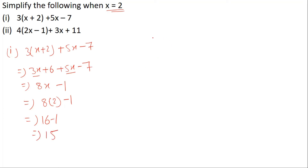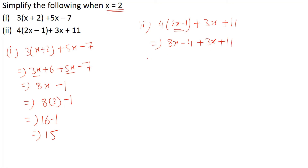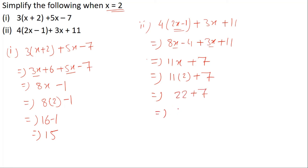Now number 2: it is 4(2x-1) plus 3(x+11). Breaking the bracket gives 8x minus 4 plus 3x plus 11. These are like terms, so 8 plus 3 is 11x and 11 minus 4 is plus 7. Now we put the value: 11 into 2 plus 7, that means 22 plus 7, which is 29.